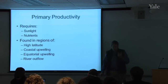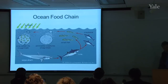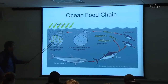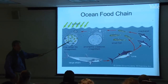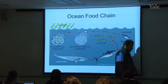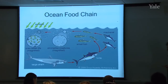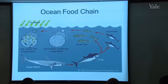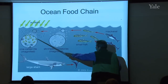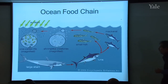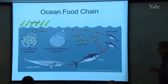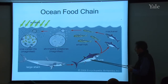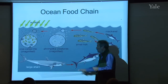Here's a typical ocean food chain. It starts with single-cell plant life — phytoplankton — that require sunlight and nutrients, especially phosphorus and nitrogen. It's carbon-based life, but carbon is plentiful; it's the phosphorus and nitrogen that limit growth. These phytoplankton get eaten by small animals called zooplankton, which are in turn eaten by small fish, larger fish, and so on up the chain. That's the base of the food chain — that's primary productivity.